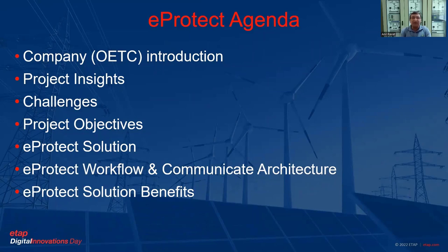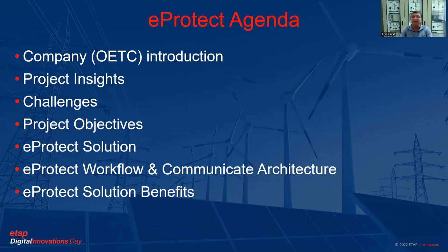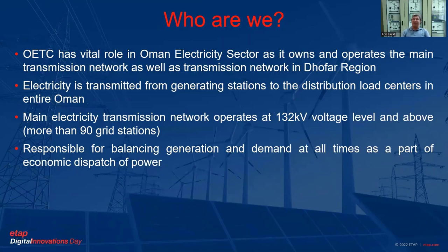We will give you some project highlights and discuss what the challenges were in our project implementation, what were the objectives of this project, and how we achieved those objectives through the eProtect solution. We will cover the workflow, communication architecture, and how this solution helped us achieve our objectives. At the end, we will also go through the 220 kV GCCIA interconnection network load shedding scheme through the RAS remedial action scheme.